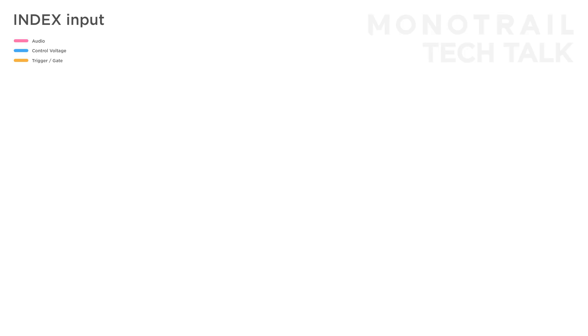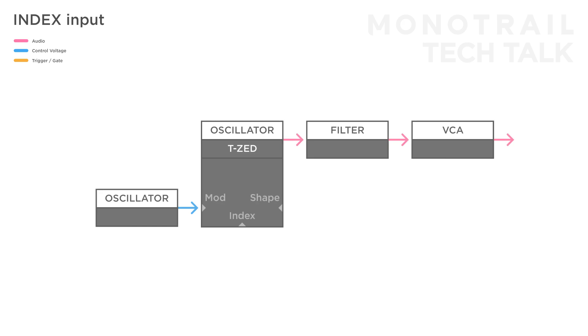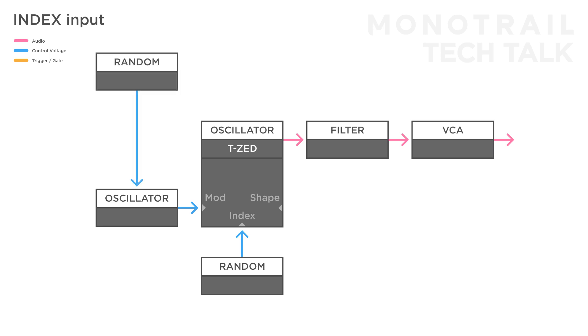The index input functions as a VCA to control the amount of phase modulation. With the attached bipolar attenuator, it's easy to dial in the right amount of modulation. You can create interesting drones and textures by sending a random voltage to the index. You can expand the depth by sending another random voltage to the frequency of the modulating oscillator and routing that signal to the filter as well.